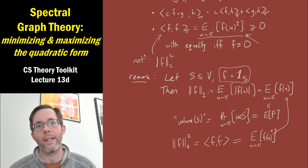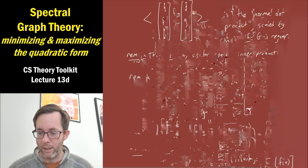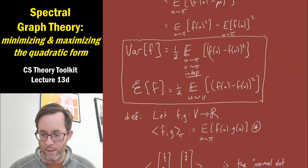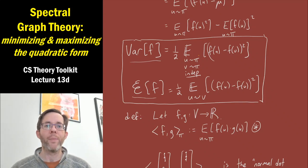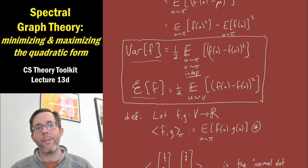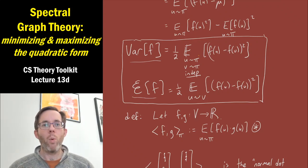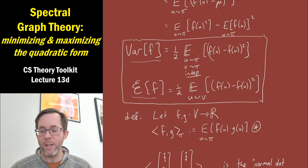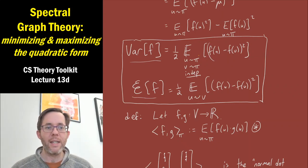In the last segment of this lecture, I'd like to get back to the discussion about the variance of a function versus its local variance or quadratic form. Given a graph g, whether or not the standard random walk from an arbitrary starting point mixes quickly — in other words, quickly gets to the stationary distribution — is determined by whether or not the quadratic form of the graph f is never small.